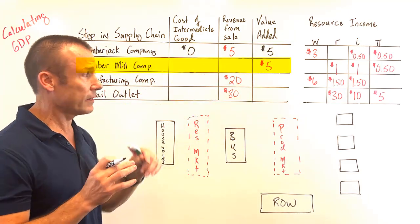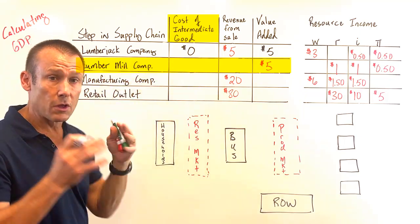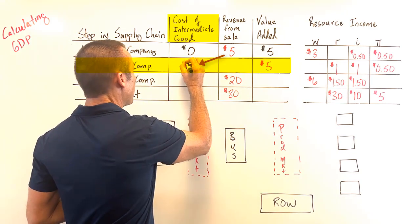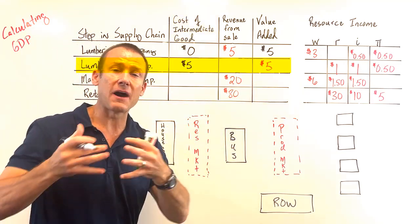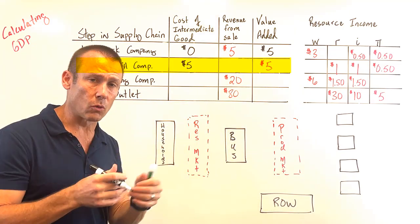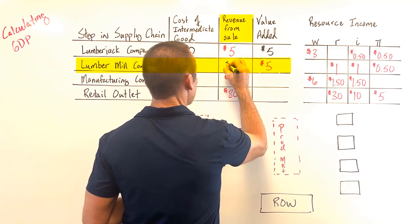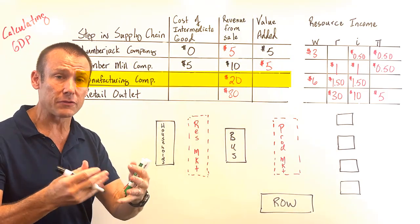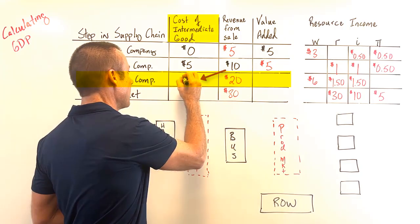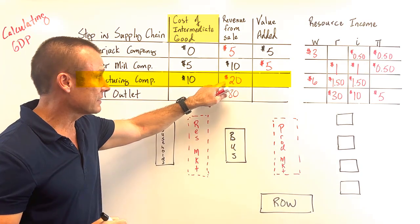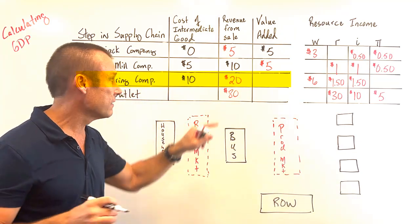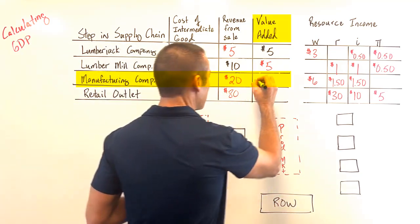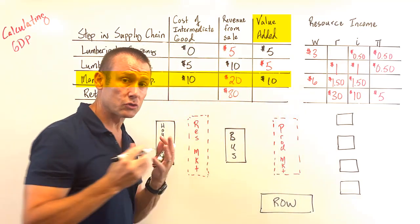The lumber mill bought the log for five dollars, and they added five more dollars of value, so they sold their refined piece of lumber for ten dollars. The manufacturer then bought that refined lumber for ten dollars. They're going to sell the baseball bat for twenty dollars, which means they added ten dollars of value.